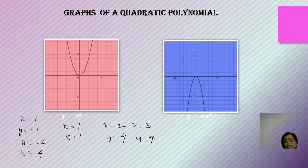If y = -x², the moment the coefficient of x² is negative, the parabola will open downwards. If the coefficient of x² was positive, the graph opens upwards. When it opens downwards, that means the coefficient of x² is negative.